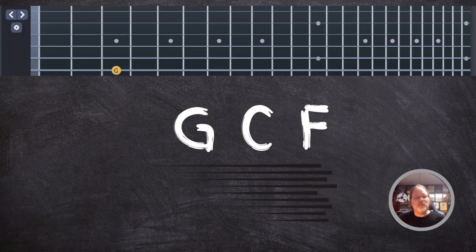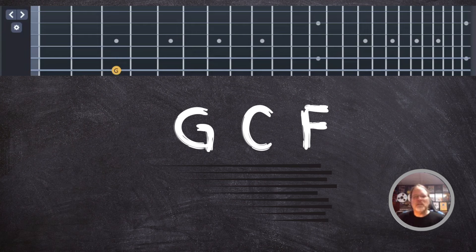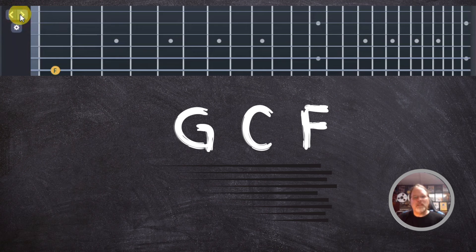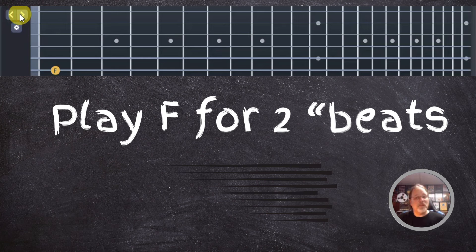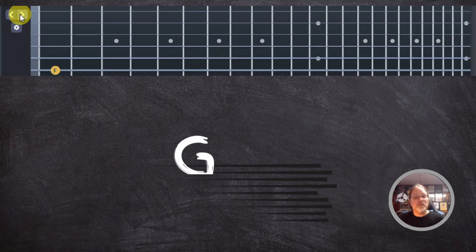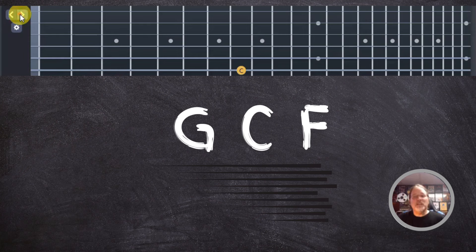From there we're going to move to G C F. I'm going to just repeat this same process. Find the G, which is at the third fret, C is up at the eighth fret, and then F is at the first fret. Then again, just run through it: G C F. Now there's three notes here, so when we end up playing along with the backing track, you're going to have to play the F for two measures. So it's going to be G for a beat, C for one beat, and then F for two beats.